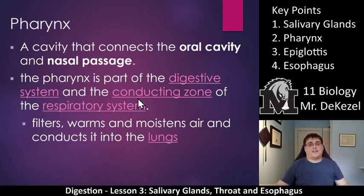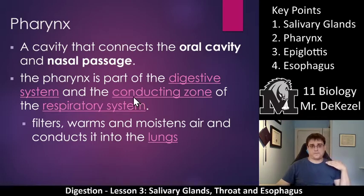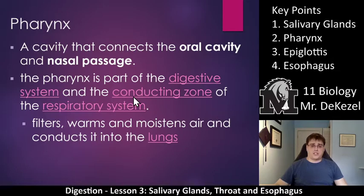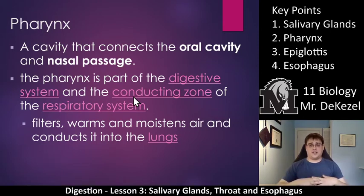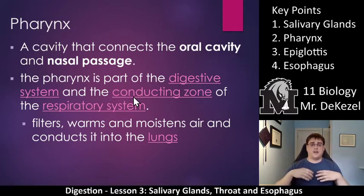The pharynx is the cavity that connects the oral cavity or the mouth and the nasal passage, which is where you breathe through your nose. So the pharynx is essentially your throat. The pharynx is part of the digestive system and part of the conducting zone of the respiratory system — essentially part of the structures that bring air into your body. It allows food to connect to the esophagus and air to the trachea, all through one tube.